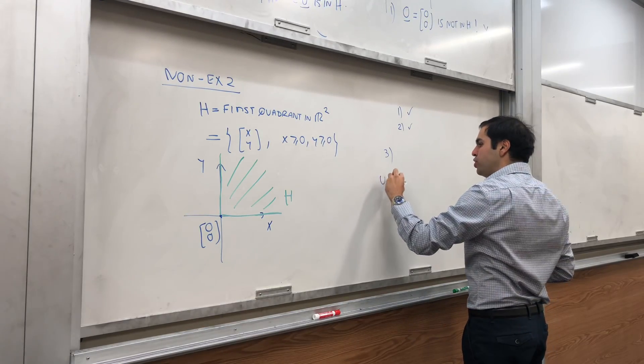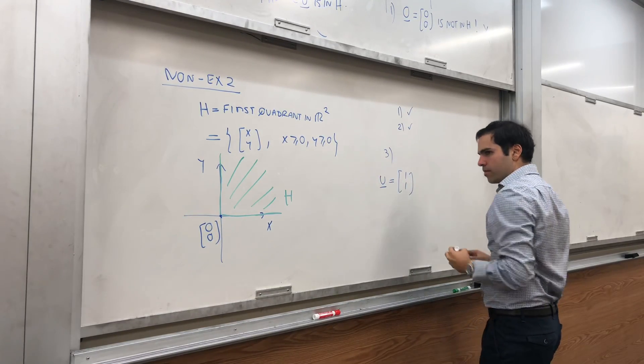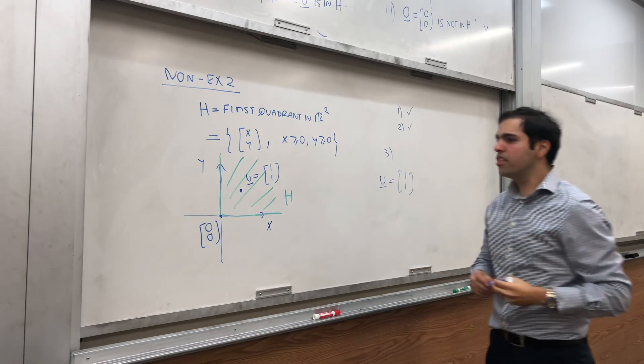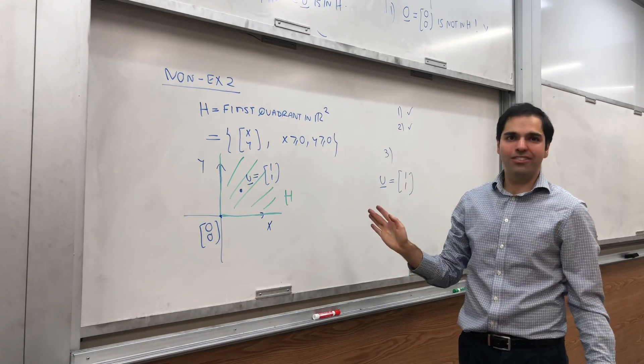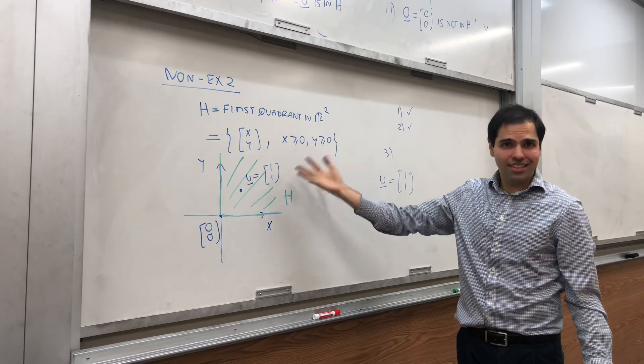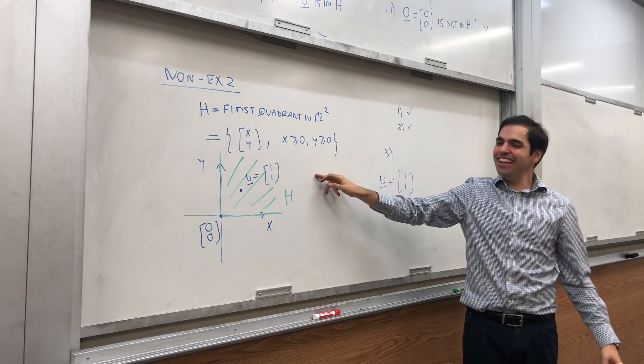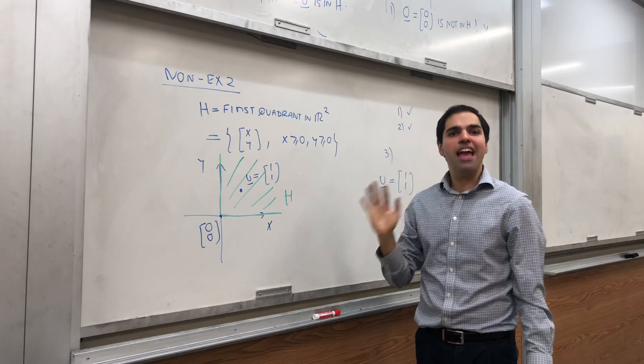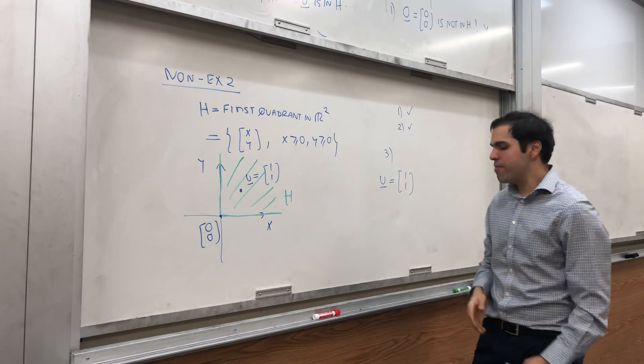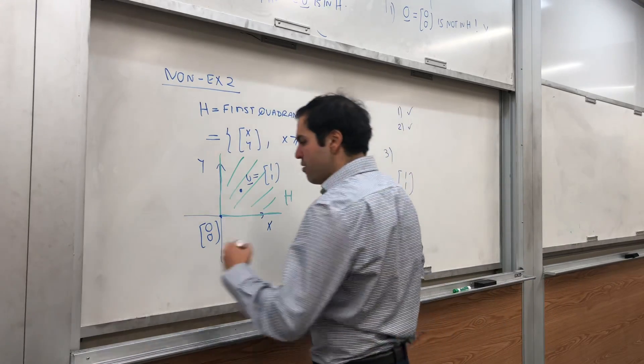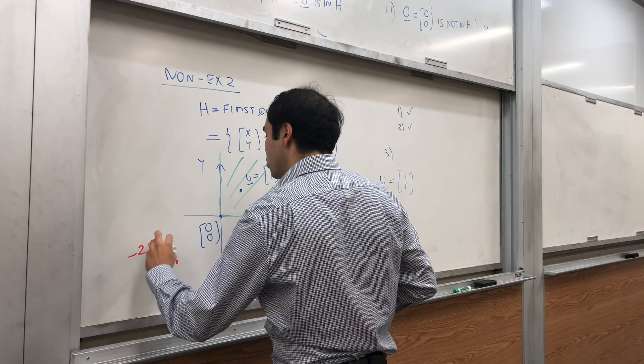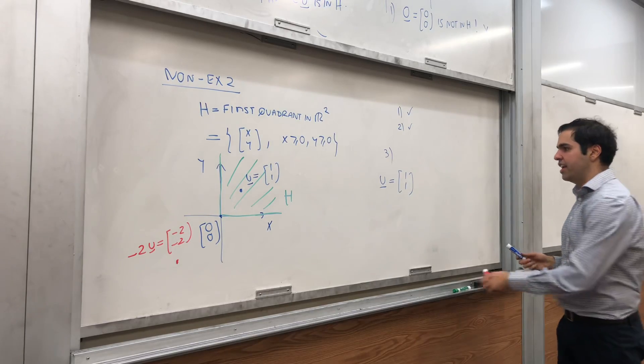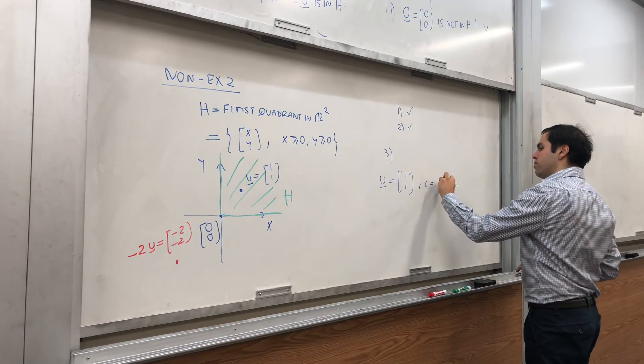For example, let u be the vector (1, 1). Maybe here. This is u, which is (1, 1). Here's the thing. Well, if you multiply u by a positive number, then we're still fine. Because we're fine. Because it's still in H. But, the point is, if you take the constants, they can be anything. They can be positive, they can be negative, they can be rational, they can be irrational. In particular, let's take minus 2u.